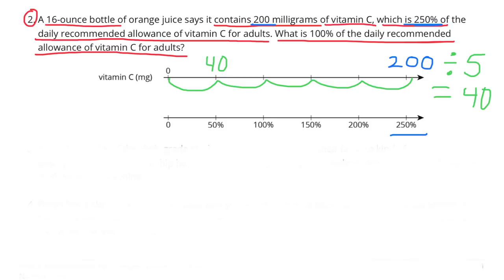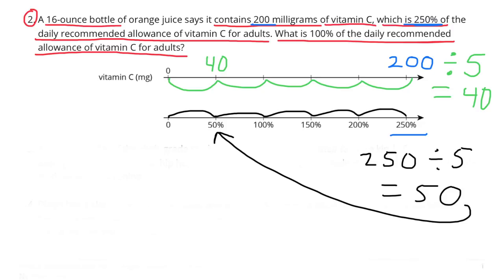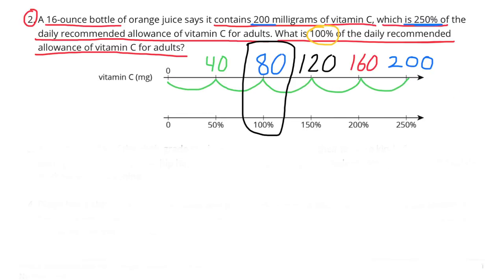If you divide 200 by 5, that gives you 40, so the top number line counts by 40. And if you divide 250 by 5, that gives you 50, so the bottom number line counts by 50. Look for 100% on the bottom number line and look at the number directly above it — that would be 80. So 80 mg would be 100% of the daily recommended allowance of vitamin C for adults.